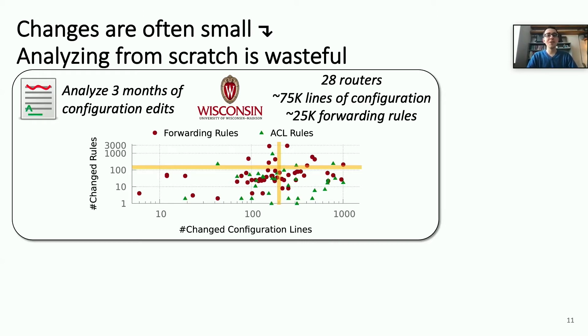For example, we analyzed three months of configuration edits from a large research university's backbone network that has 28 routers. There's about 75,000 lines of configuration across these routers, and in total, these routers have about 25,000 forwarding rules. We looked at three months of changes and plotted here for each of those changes the number of lines of configuration that's changed, as well as the number of forwarding rules or access control list rules that are changed as a result of this configuration change. We can see that the average number of lines of configuration changed is actually only about 200 lines, which is less than 0.3% of the overall lines of configuration in this network. And furthermore, if we look at the number of forwarding rules that are changed, we see on average that only 150 rules are changed, which is less than 0.6% of the total number of forwarding rules in the network.